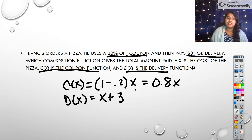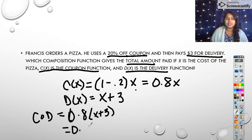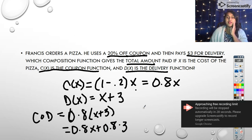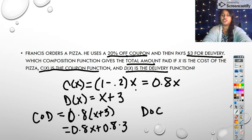So now I have my two compositions. But it's asking me which one is actually the total amount. Is it going to be the coupon and then the delivery or delivery and then the coupon? Well, let's try both. So here is the delivery applied first. Okay, so I do 0.8 times x plus 3. And if I track that through, if I distribute, that's 0.8x plus whatever 0.8 times 3 is. And then, of course, we're going to do compose c. And we'll join back in that second video in just a second.